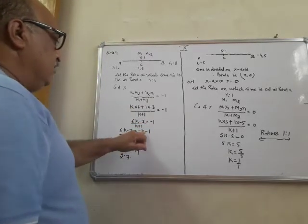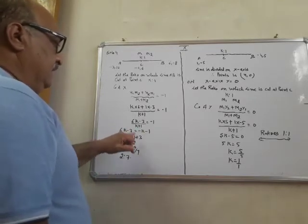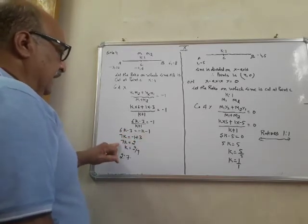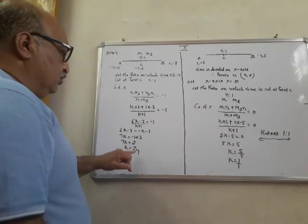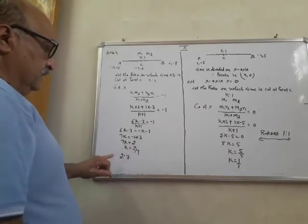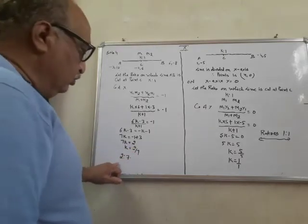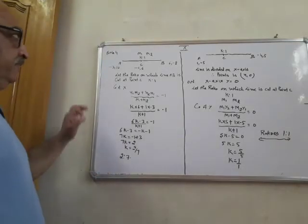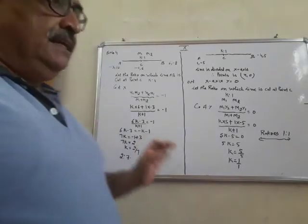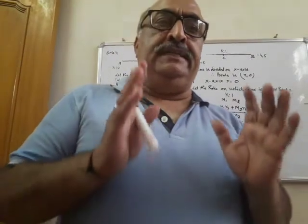Bring k to one side: 7k equal to 2, k equal to 2 by 7. Therefore, this is the ratio — 2 ratio 7 — where the AB line is cut at point C.